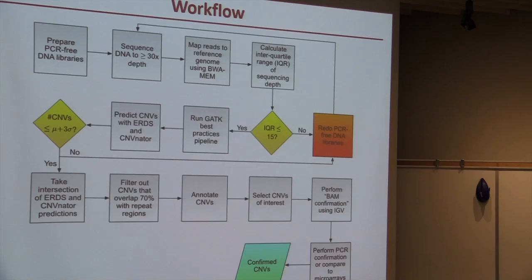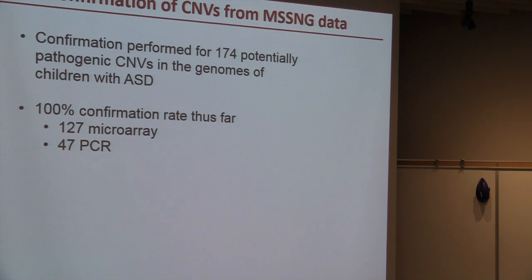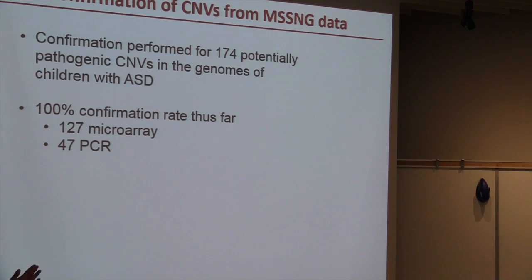Based on all our analyses, we developed a workflow for accurately detecting CNVs from whole genome sequencing data. Returning to the Missing project — genomes from families affected by autism — we used this workflow to look for potentially pathogenic CNVs overlapping genes associated with autism. We found 174 of these in different individuals, and thus far all of them have validated as real CNVs: 127 validated using microarrays and 47 using PCR. So far, our workflow seems to be working very well.